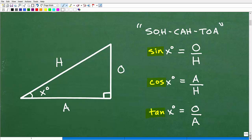What this stands for is: sine is equal to the opposite over hypotenuse, cosine is the adjacent over the hypotenuse, and tangent is the opposite over the adjacent.